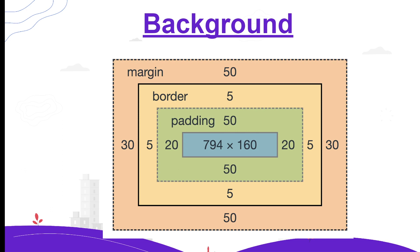On screen you can see the box model diagram. In the middle, the blue area shows 794 by 160 — that is the size of our element. Outside the blue box we have padding in green color: 50, 50, 20, 20, representing top, bottom, left, and right padding. Padding is the area between the border and the element. Outside padding we have the border, and the outermost area is our margin, used to separate two tags.